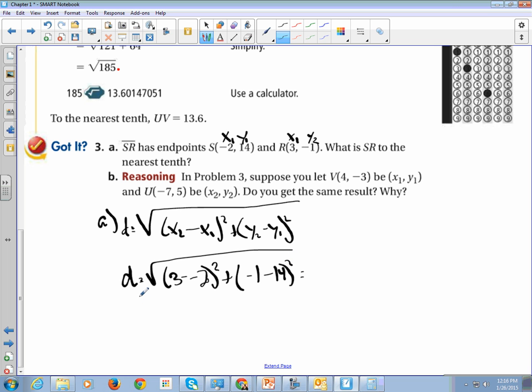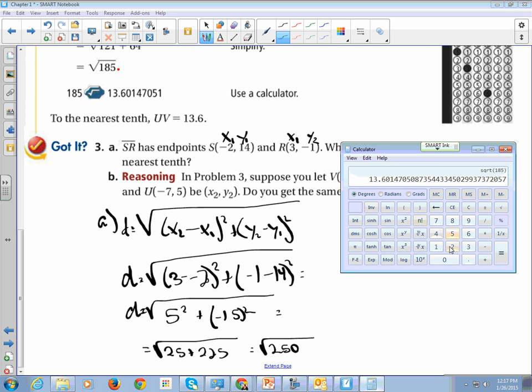We're going to simplify, simplify, simplify. So 3 minus a negative is 3 plus 2 is 5. And negative 1 minus 14 is a negative 15. And we get 25 plus 225, which is square root of 250 to the nearest tenth is 15.8.